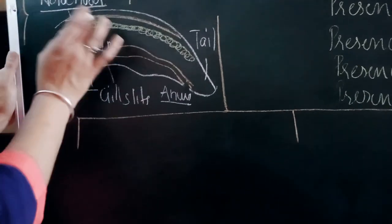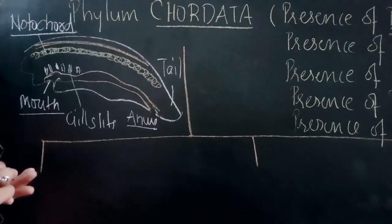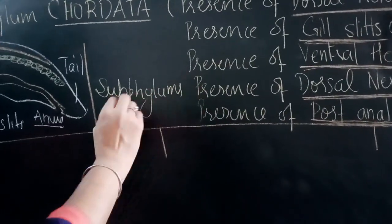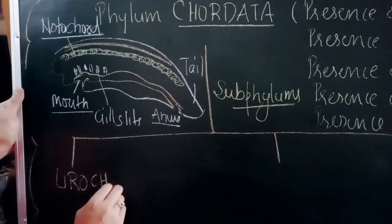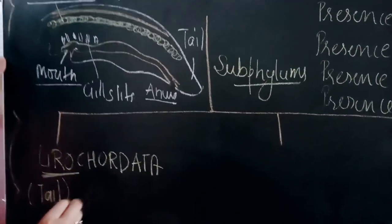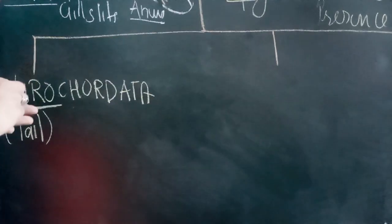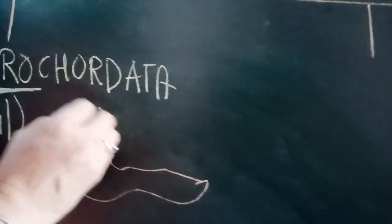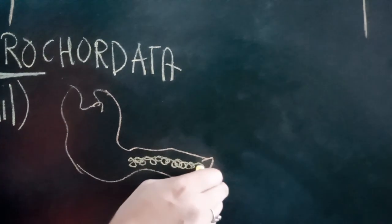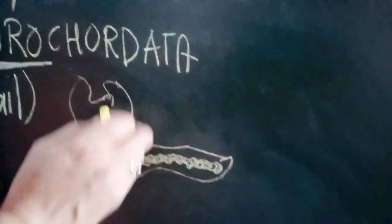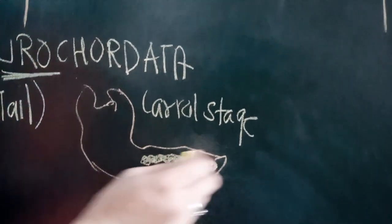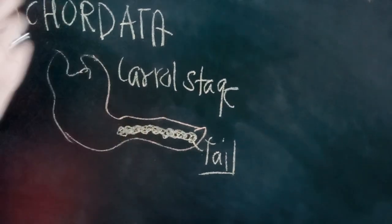Depending upon the fate of the notochord, chordates are divided into three subphylums. Number one is called Urochordata — here the word 'uro' means tail. If the organism is such that the larval stage has the notochord restricted only towards the tail region, then the organism is called a urochordate.